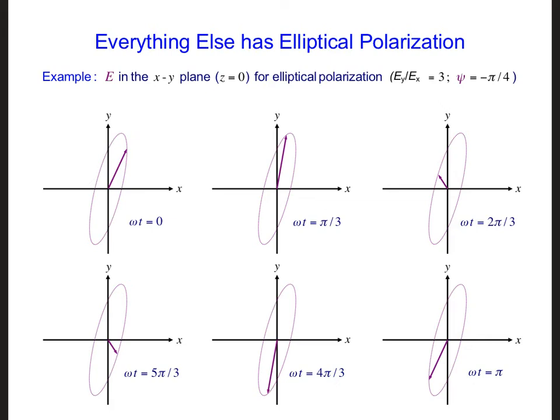Linear and circular polarization are two special cases. If a wave is not linearly or circularly polarized, then it is elliptically polarized. For the case of elliptical polarization, the electric field traces out an ellipse over time when plotted in one position in space.